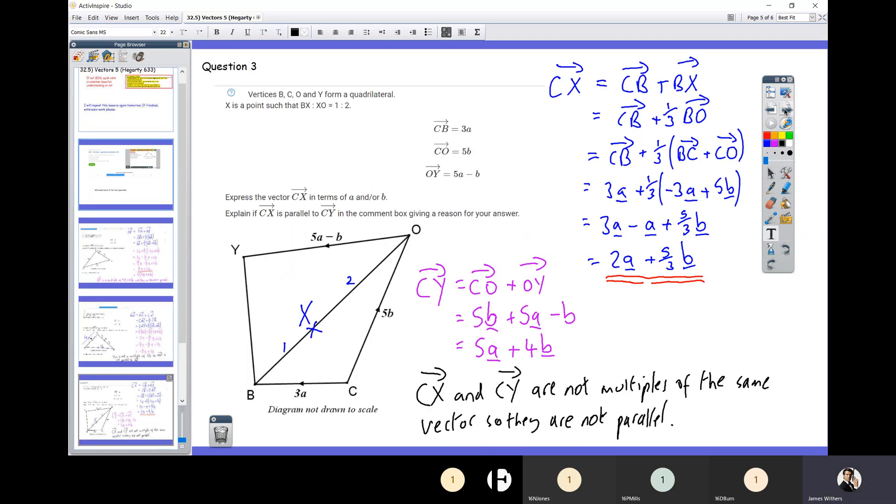Now in question three, very similar again, but you've actually got to go and do some work to work out what both of the vectors are. There isn't like one of them is either given to you or you can just literally read it from the diagram. So you've got to go and do some maths to work out what CX is—that's what I've done over there in blue. So I've just worked the way through the algebra and come out with CX being 2a plus 5 thirds b. That's what part one of the question wanted. Over here in purple, I've then just gone and worked out what CY is. Now if this one here was, say, exactly double that or triple that, they would be parallel. But it's not double or triple it. If I take that first term, how do I get from 2a to 5a? Well, I times it by two and a half. Do I get 4b when I times five-thirds by two and a half? No, I don't. So it is not a multiple of the vector; they are not parallel.